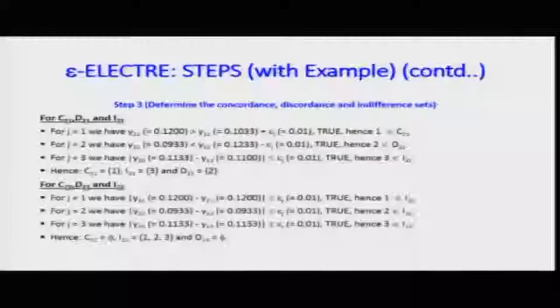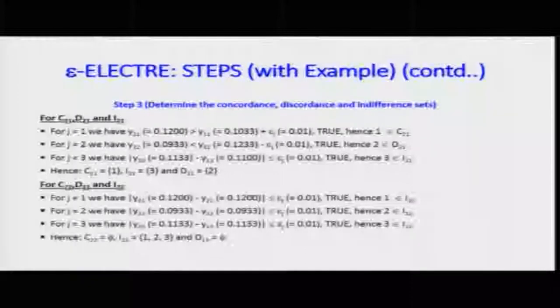Continuing our discussion, we were calculating the values of C11, D11, and I11, where C, D, I are the values in the concordance set, discordance set, and indifference set respectively. Similarly, we calculate C12, D12, and I12, then C13, D13, and I13, going column-wise or row-wise through the matrix.